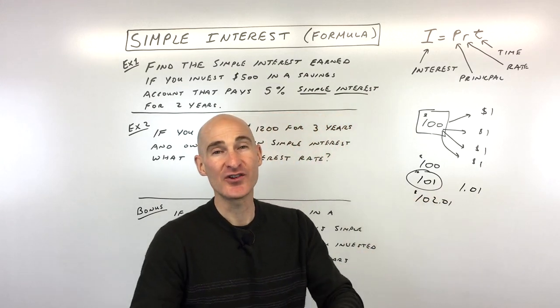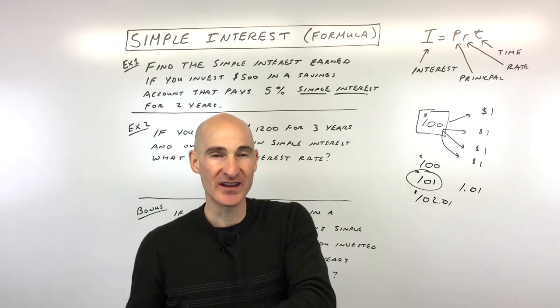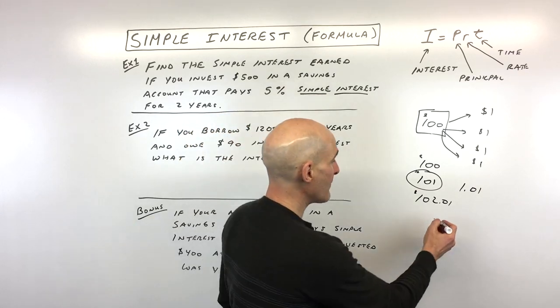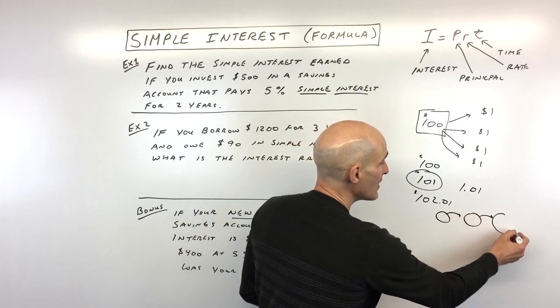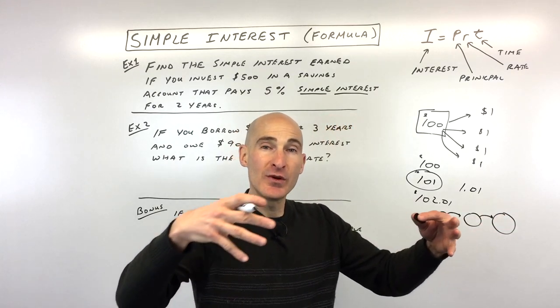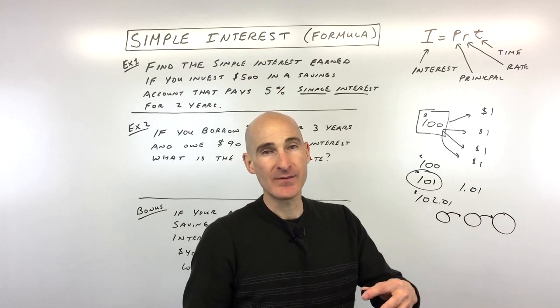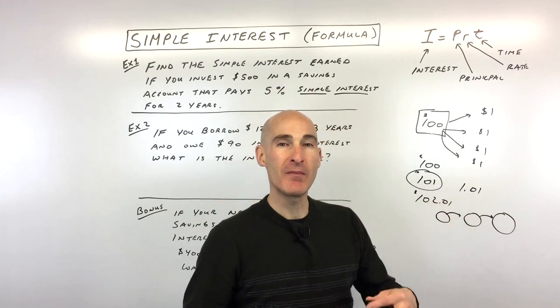Then you take the $102.01 and calculate 1% on that. What happens is it's like a snowball. You're rolling that snowball, and each time you roll it, it's getting a little bit larger than it did the previous time. So you keep adding more to that initial amount.